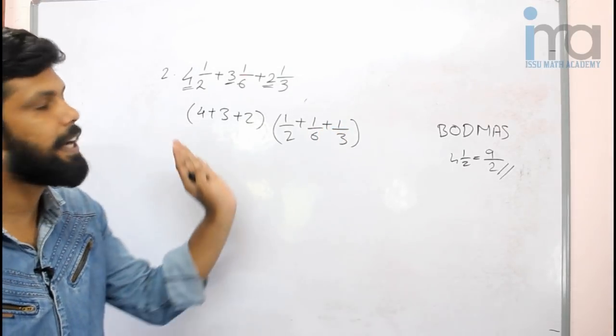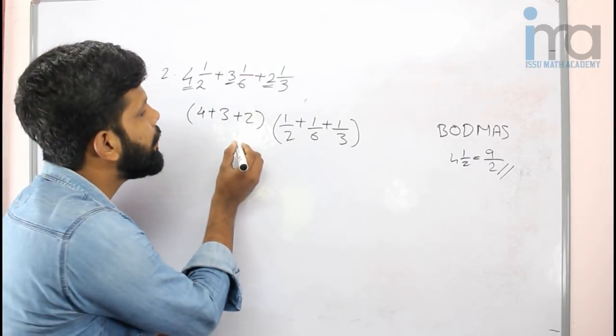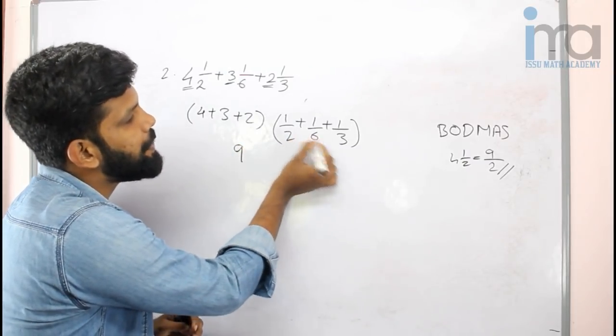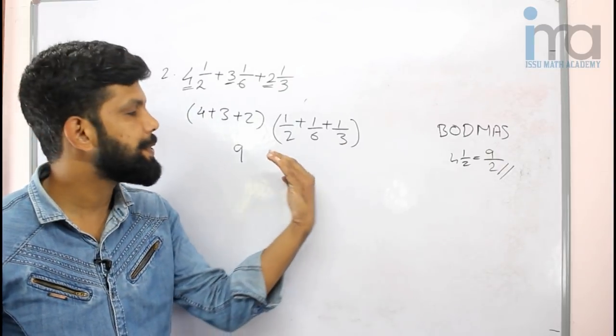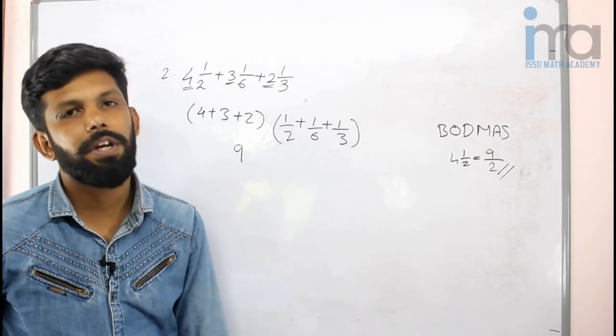What is the idea of this? 4, 3, 7, 2, 9. This is the same thing. This is the denominator. This is the LCM: 2, 6, 3.